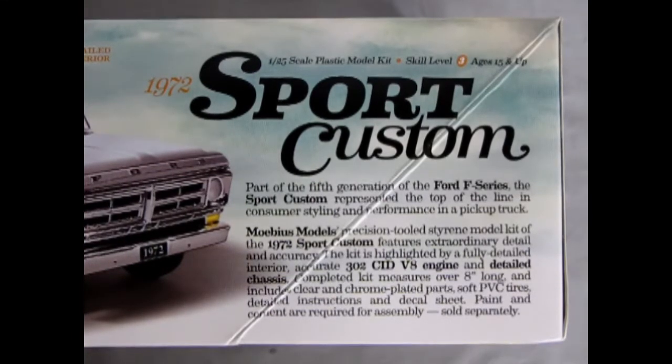Mobius Models precision tooled styrene model kit of the 1972 Sport Custom features extraordinary detail and accuracy. The kit is highlighted by a fully detailed interior, accurate 302 cubic inch V8 engine, and detailed chassis. Completed kit measures over eight inches long and includes clear and chrome plated parts, soft PVC tires, detailed instructions, and decal sheet. Paint and cement are required for assembly, sold separately.